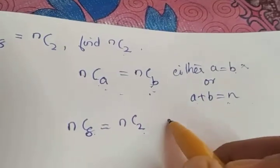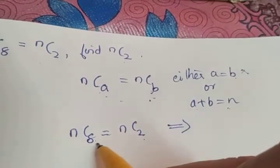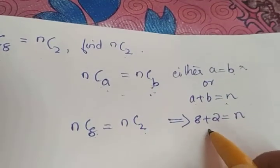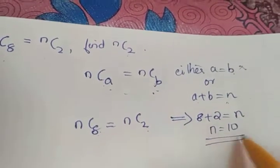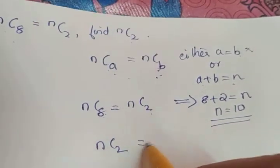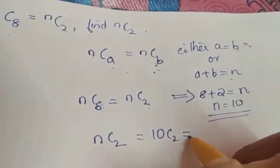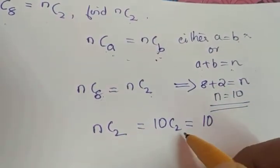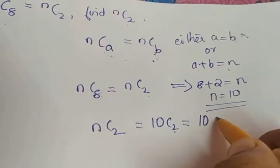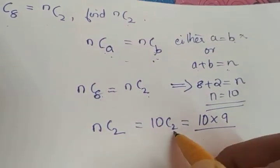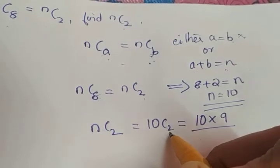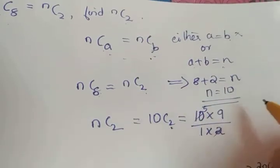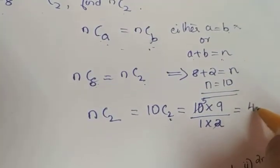So the second condition must hold: a plus b equal to N. That means 8 plus 2 must equal N, so N equals 10. The question asks us to find NC2, which is now 10C2. By the formula, we write 10 into 9 in the numerator — two integers in descending order — divided by 2 factorial, which is 1 into 2. The 2 and 10 cancel giving 5, and 5 into 9 gives 45.